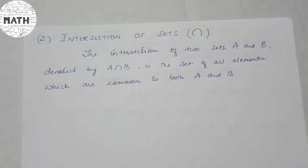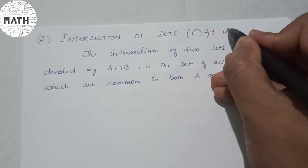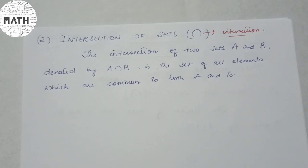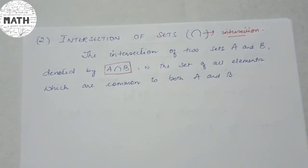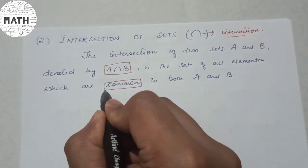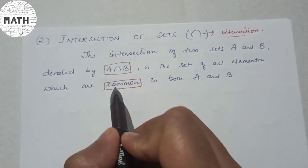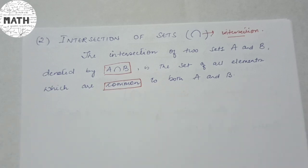The next topic under operations on sets is the intersection of sets, denoted by an inverted U symbol. The intersection of two sets A and B, denoted by A intersection B, is the set of all elements which are common to both A and B. So intersection means finding what is common between the two sets.